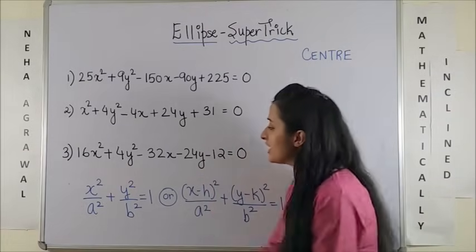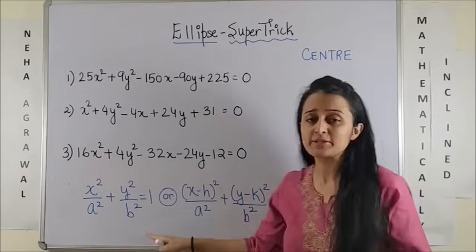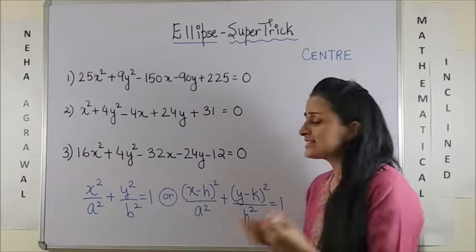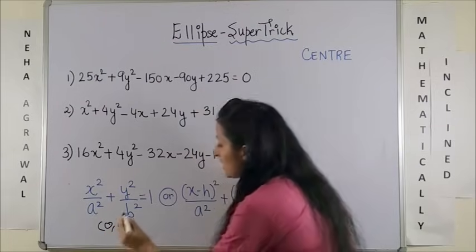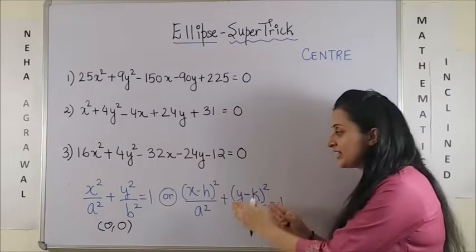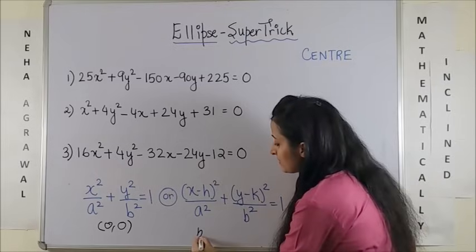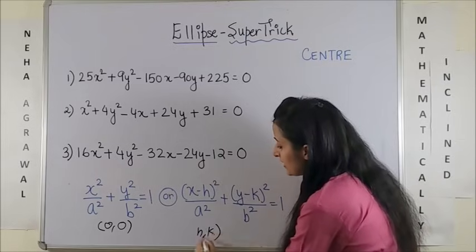We all know if we are given the equation of an ellipse in this form, well the center is simply 0,0. And in case it is given in this form, then the center is simply h,k.